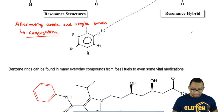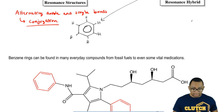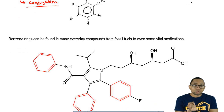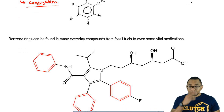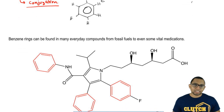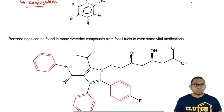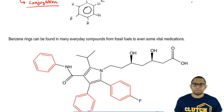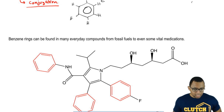Benzene can be found in everyday compounds — from the gasoline we drive with, to fossil fuels from oil rigs. Even when we break down and burn fossil fuels, some of the byproducts are benzene.